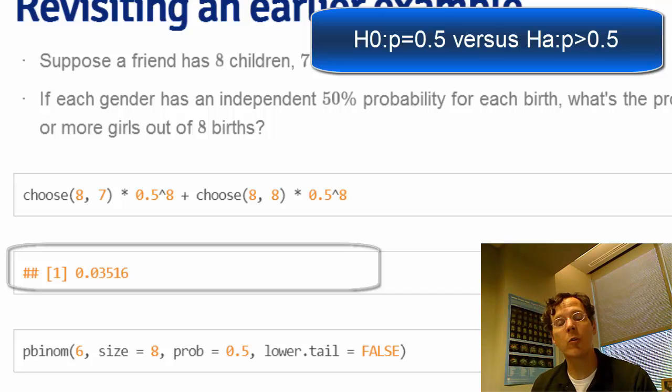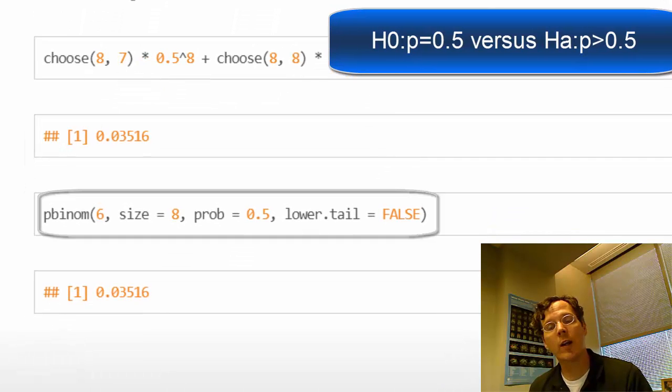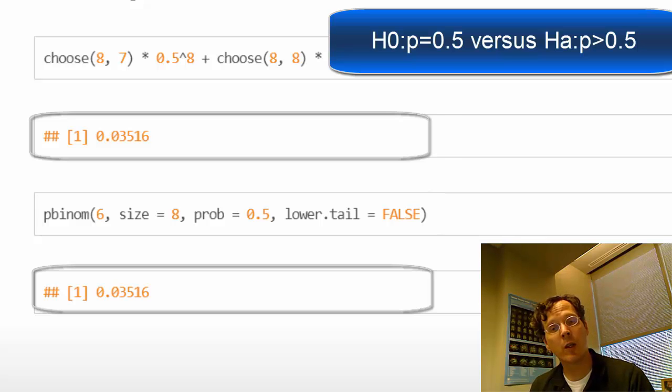I also go through the calculation here, where I do pbinom instead of directly plugging into the binomial formula, and of course you get the same number. If we were testing that hypothesis, we would reject at a 5% level and a 4% level, but we would not reject at a type 1 error rate of 3%.